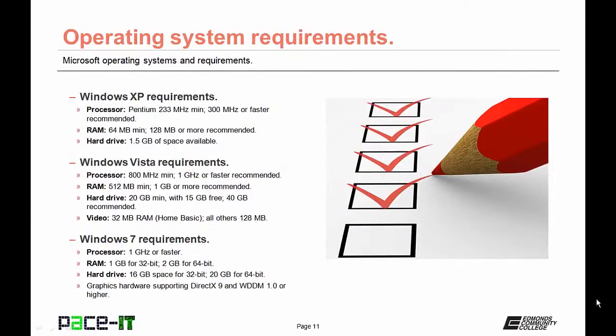Microsoft recommended the hard drive be at least 40 gigabytes. Microsoft also added video requirements to Vista — your video hardware had to have at least 32 MB of RAM to run Home Basic, and all other versions required 128 MB.